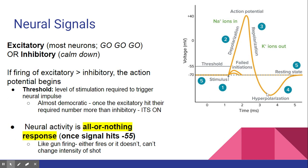The neuron repolarizes — and because it's trying to do so quickly, it often shoots down below resting state before coming back. It then goes through a refractory period where it can't fire, but once it hits the resting state again it can fire once more. A key term here is threshold — you'll notice failed interactions on the chart. This means the neuron got some stimulation and started getting ready, but until it hits that threshold, nothing happens.